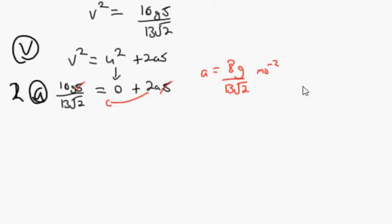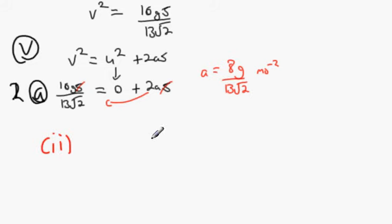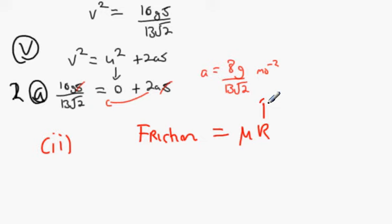If friction is too low, our acceleration would be greater than what we found. To go about this, we're talking about a force equation. Friction equals mu times R — the reaction force. So we need to look into a force equation.